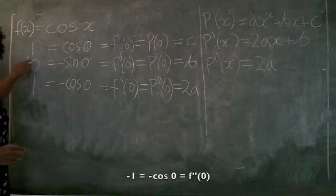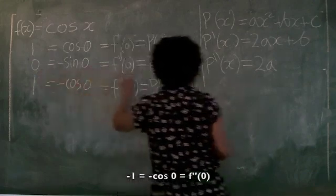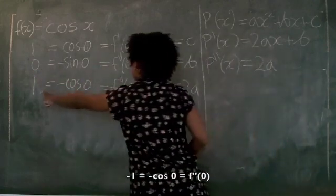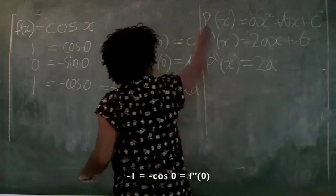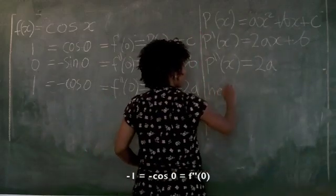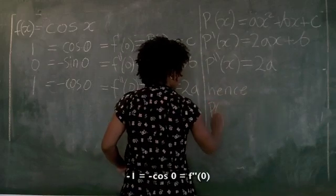So from this, we see that 1 is equal to c, 0 is equal to b, and negative 1 is equal to 2a. Hence, our polynomial, p of x, is going to be equal to...